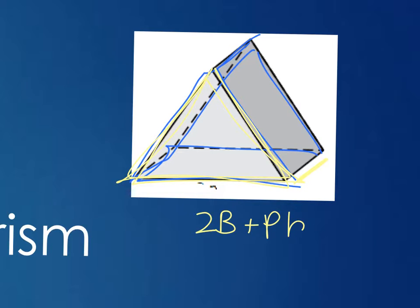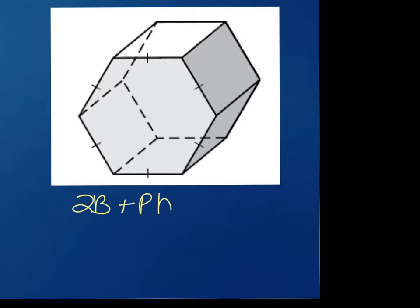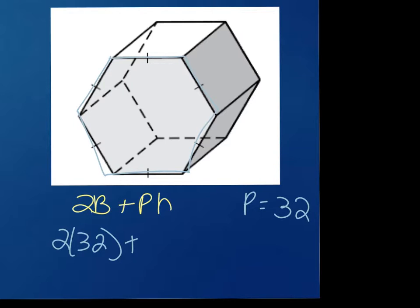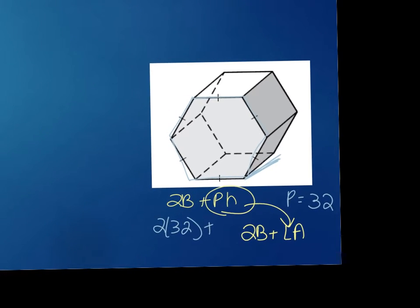For the hexagonal prism: find the area of one hexagon, do 2B plus Ph — so 2 times 32 (for example) plus the perimeter of the pentagon times the height of the prism. LA is the perimeter times the height; it doesn't count the pentagons. So 2B plus LA is the same as 2B plus Ph. Sometimes they ask for lateral area first, so if you already have that, just plug it in.